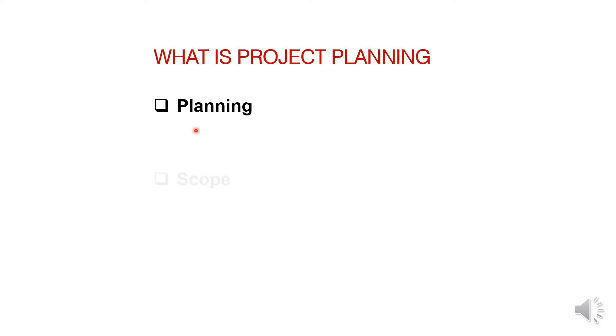First of all, let us understand what is project planning. Planning is the thought process to determine the work of the project. Let's see how the project plan is developed. It includes scope planning, which is to determine the feasibility of the project according to the customer's need and decide the line of action accordingly. In this stage, the project manager has to think about how much resources and time will be required for the project.